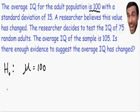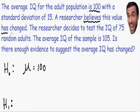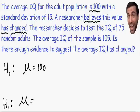Now let's state our alternative hypothesis. H sub 1, or H sub A, is always what is being claimed. In this example, the researcher believes that the average IQ has changed — he doesn't know if it has gone up or down, but he believes it has changed, so the average is not 100 anymore. The alternative hypothesis is that the average IQ does not equal 100.